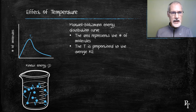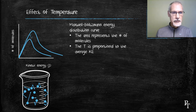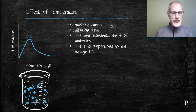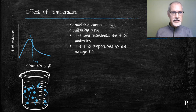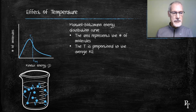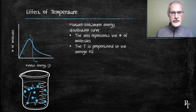The area underneath the line represents the number of molecules, so if I increase the number of molecules, I increase that area. Secondly, there's an average kinetic energy — a line that divides the area in half. That average kinetic energy is proportional to the temperature of my mixture. If I increase the temperature, that average energy must move over to the right.